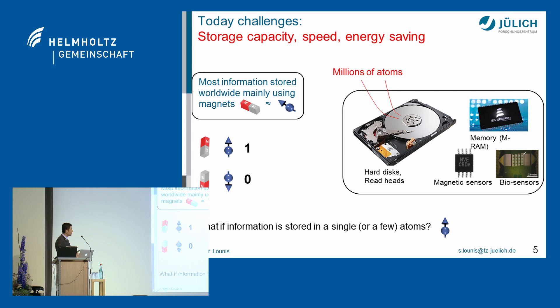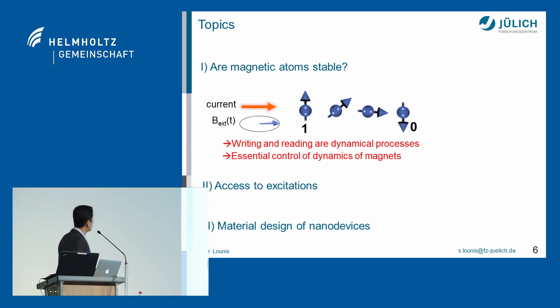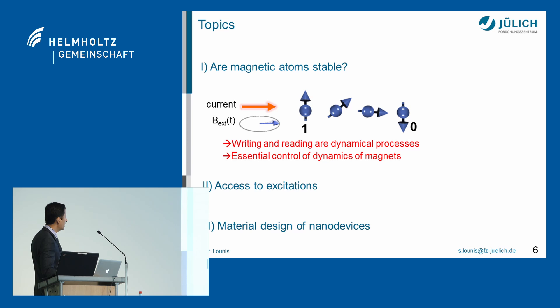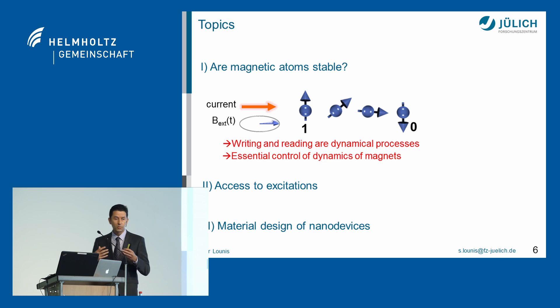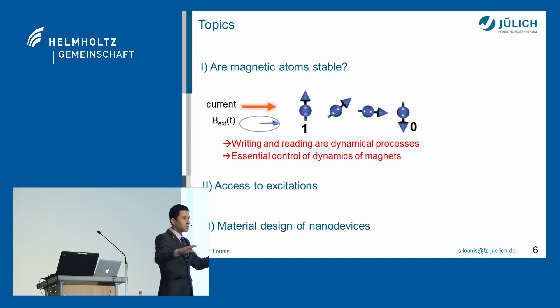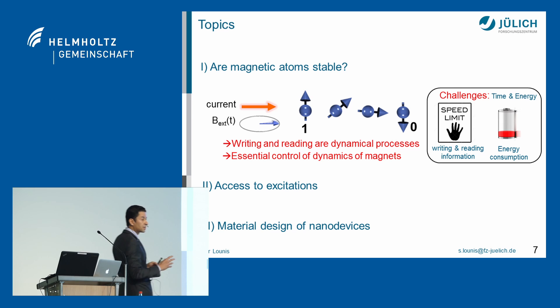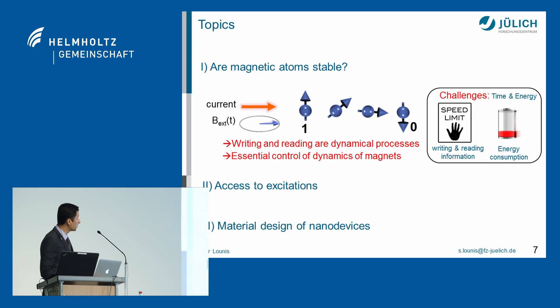I will address three aspects: the stability of these magnets, how to write the information at the level of these magnets — which means addressing excitations — and nano devices. When you manipulate a magnetic pit, many complex processes occur: this magnet will rotate, perturb the ocean of electrons, leading to complex phenomena like currents that hit all the objects and reverberate — a kind of thunderstorm at the level of this ocean of electrons. This affects the writing process and leads to energy dissipation.